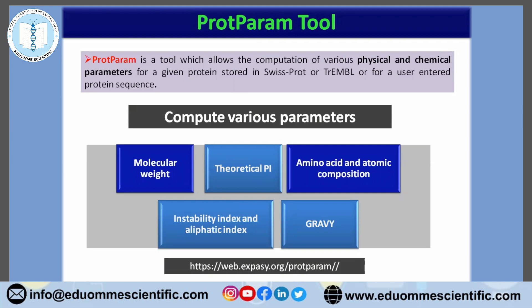So in this tool, you can compute various parameters like molecular weight, theoretical pI, amino acid composition of a particular peptide and protein, atomic composition, half-life, instability index, aliphatic index, along with the GRAVY values. ProtParam is very useful to compute various physico-chemical properties that can be deduced from a protein sequence or peptide.